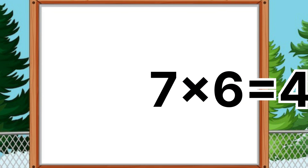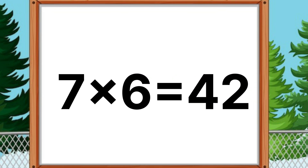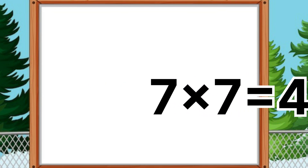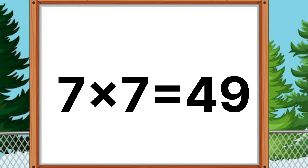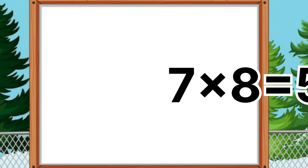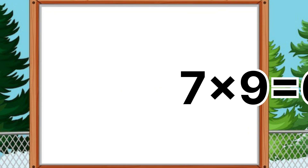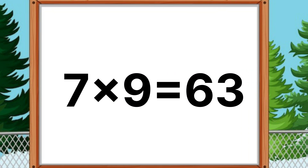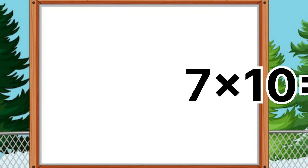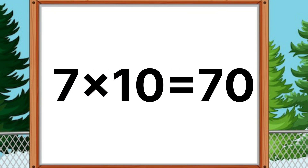Seven sixes are forty-two. Seven sevens are forty-nine. Seven eights are fifty-six. Seven nines are sixty-three. Seven tens are seventy. One more time.